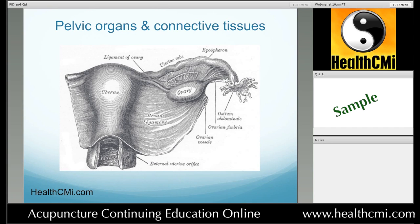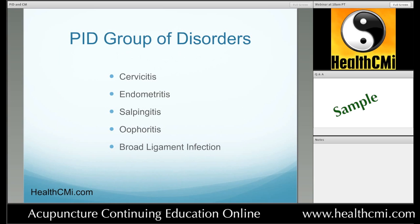Taking a look at the overall perspective on PID, we see that PID is a group of disorders. It is inflammation of the female pelvic organs and connective tissues caused by an infection. This infection may involve a single organism — a virus, a bacteria, pinworms, some type of parasite — or it may be polymicrobial. So a variety of factors can be involved in PID, and they can combine to create different types of disorders as classified by Western medicine.